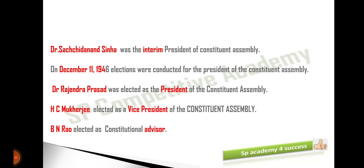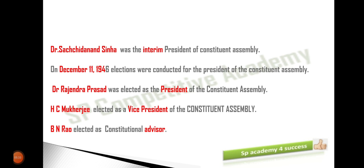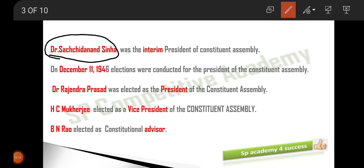To run the Constituent Assembly, they required a president — just like Rajya Sabha and Lok Sabha have a speaker who looks after activities and ensures things run smoothly. So the Constituent Assembly also required a president. Dr. Sachidanand Sinha was elected as the interim president of the Constituent Assembly.